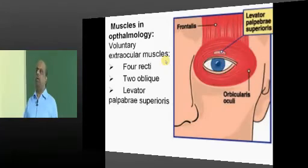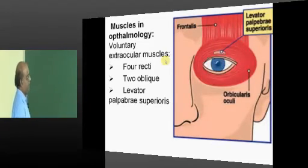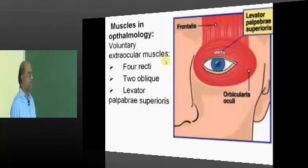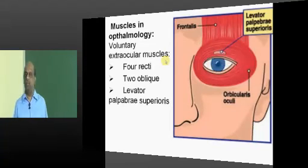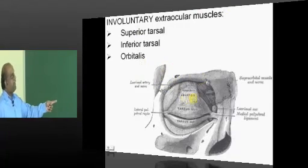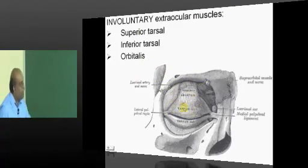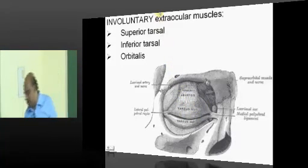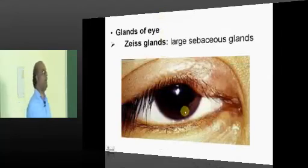Then what are the important muscles in ophthalmology? We have four recti, two obliques, one levator palpebrae superioris which are all basically voluntary extraocular muscles. Then we have a superior tarsal, inferior tarsal and orbitalis which are the involuntary extraocular muscles.